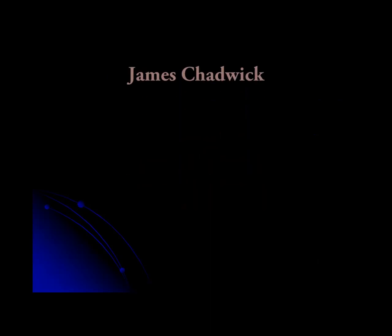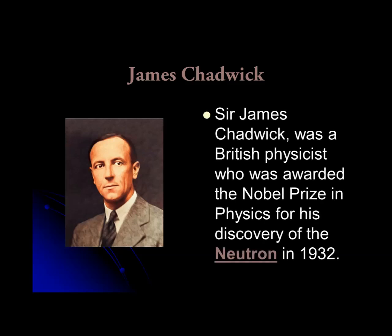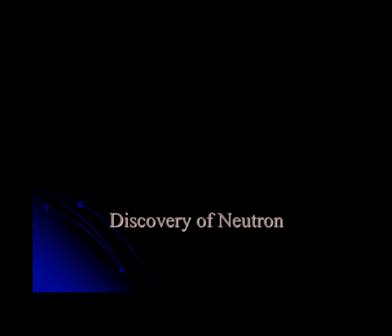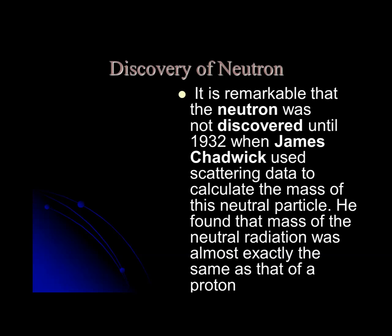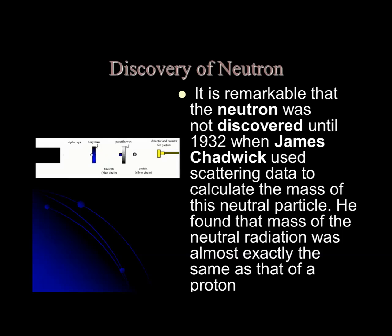Then finally came James Chadwick, who discovered neutrons. Sir James Chadwick was the British physicist who was awarded the Nobel Prize in Physics for his discovery of the neutron in 1932. It is remarkable that the neutron was not discovered until 1932, when Chadwick used scattering data to calculate the mass of this neutral particle. He found that the mass of the neutral radiation was almost exactly the same as the proton, and so he discovered the neutron for the first time.